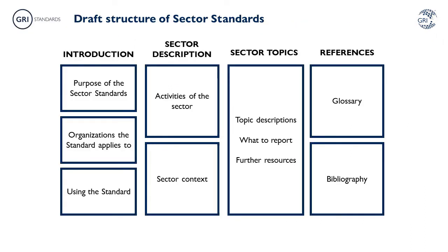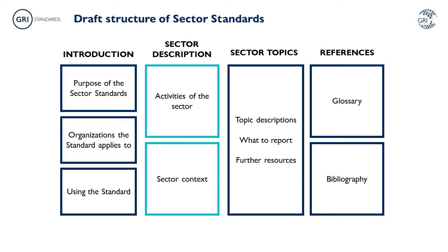The first draft of a Sector Standard has four main sections. In the Introduction section, you can find a list of the types of organisations the Sector Standard applies to, along with information about how to use the standard. The next section, Sector Description, provides an overview of the sector, including its activities, types of business relationships and context.